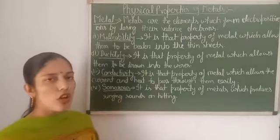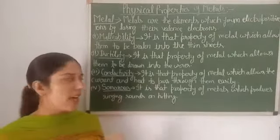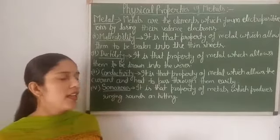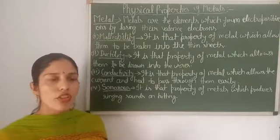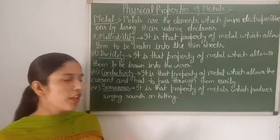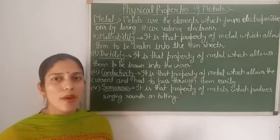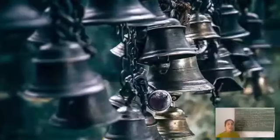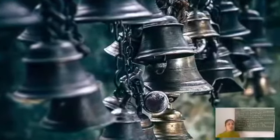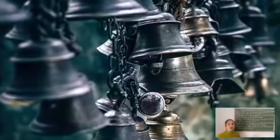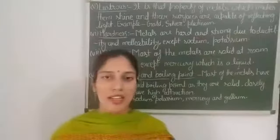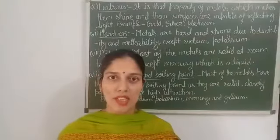Silver is the most conductive metal, and our wires are made with copper and aluminium metals. The next property of metal is called sonorous — it is that property of metal which produces a ringing sound when struck. Because of this property, all bells are made with metals so that they can be used to produce sounds.